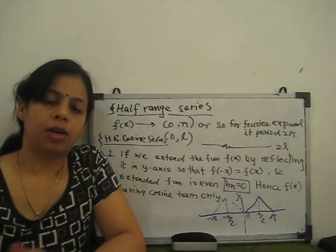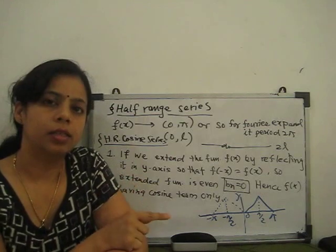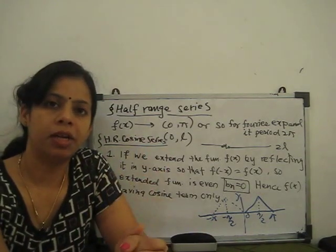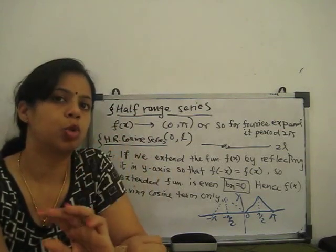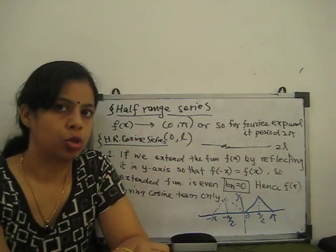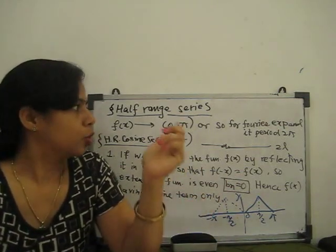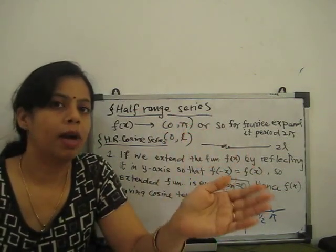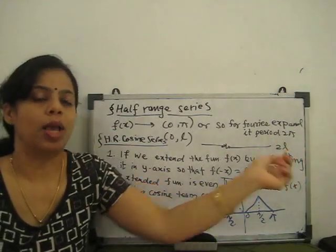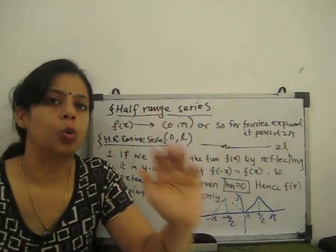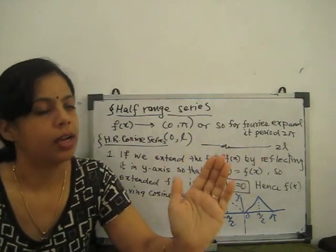Welcome to our next video, one step further for Fourier series. This is the last topic: half-range series. For Fourier series, we need the limit from negative to positive — either minus pi to plus pi — because sine and cosine series are periodic after 2π. So we need a 2π interval. In general, if the interval is 0 to l, the full interval difference is 2l. The half-range series has only half interval, 0 to π.